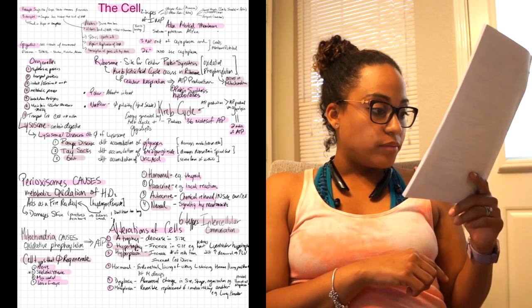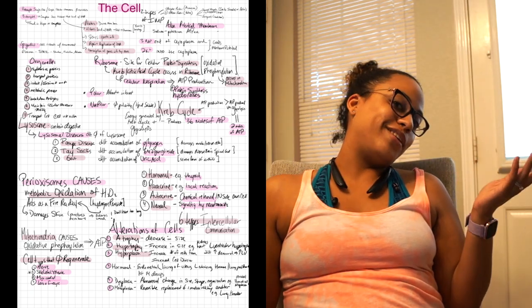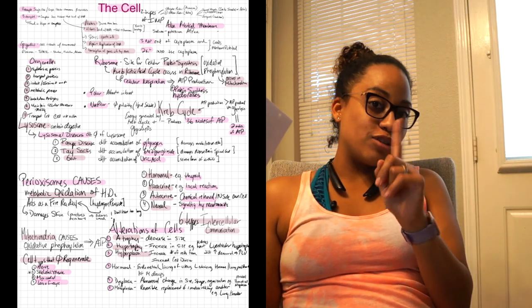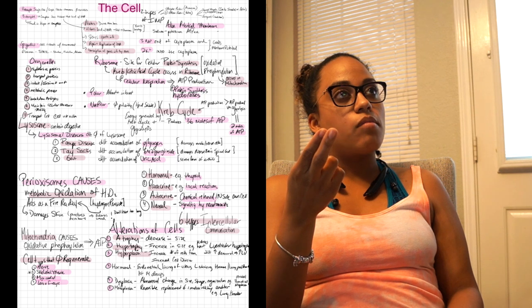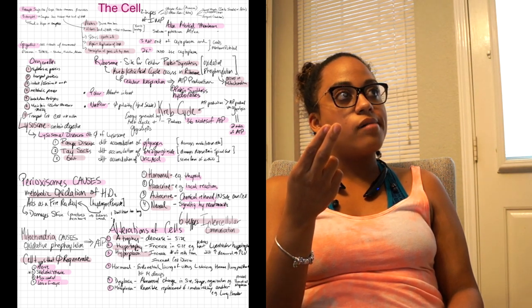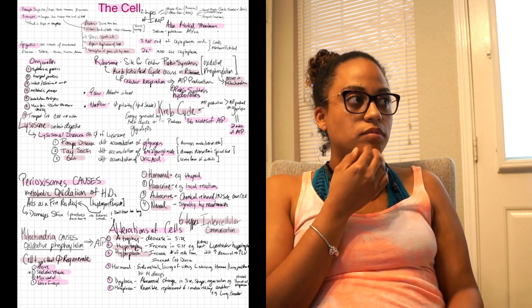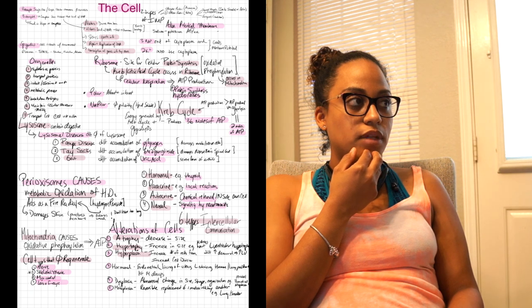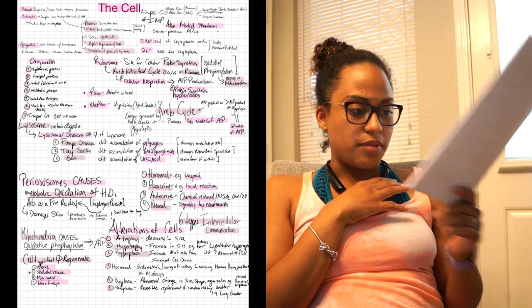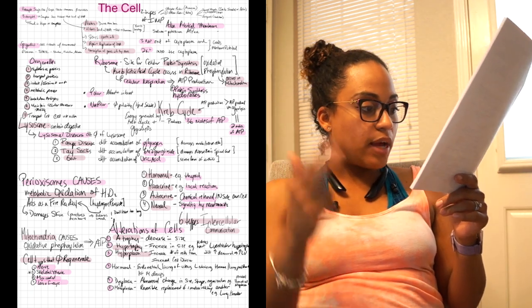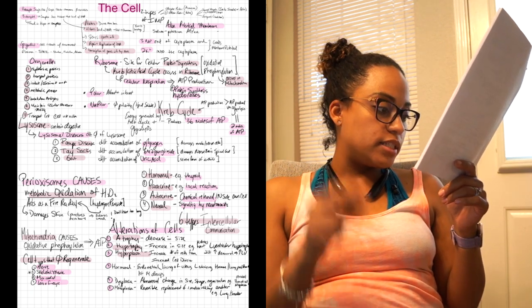Then alterations of cells. There are six different ways that cells are altered. Use those keywords, people. One is atrophy, hyperplasia, metaplasia, hypertrophy. Let's read them: atrophy, hypertrophy, hyperplasia, hormonal, dysplasia, and metaplasia. So I missed the hormonal and dysplasia.